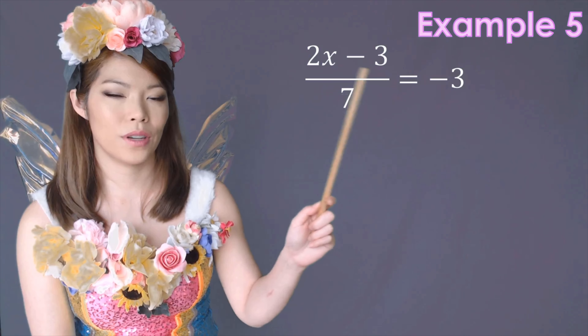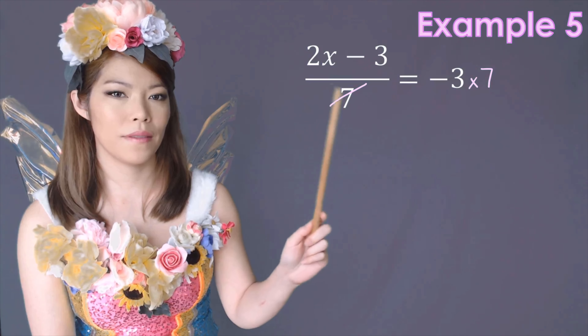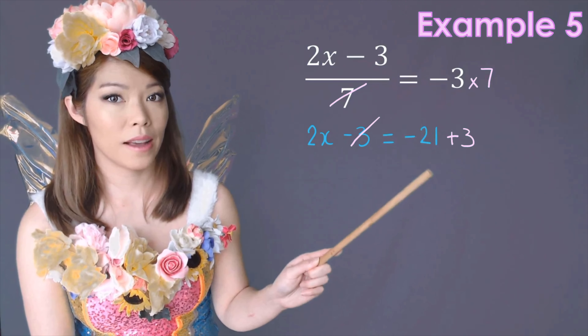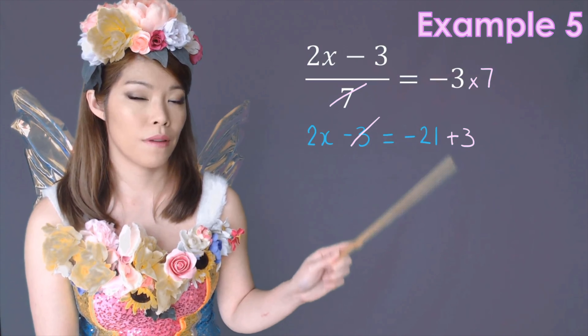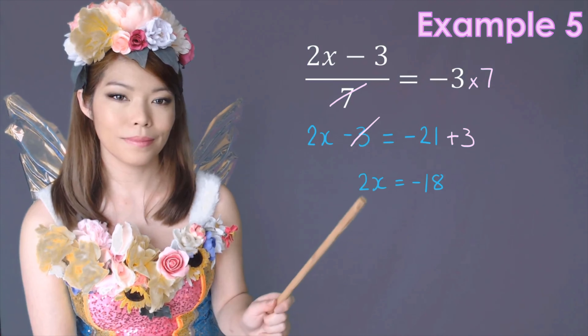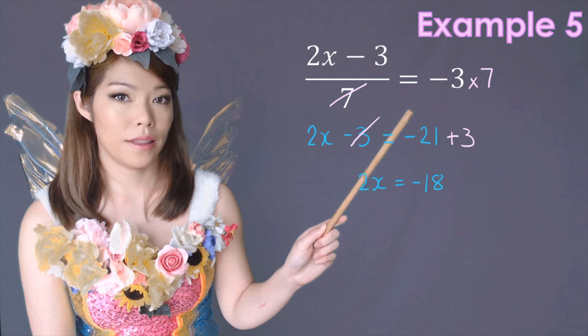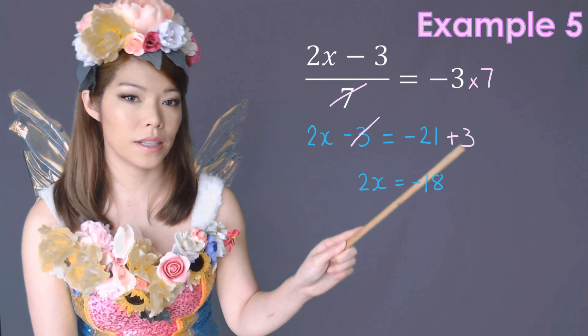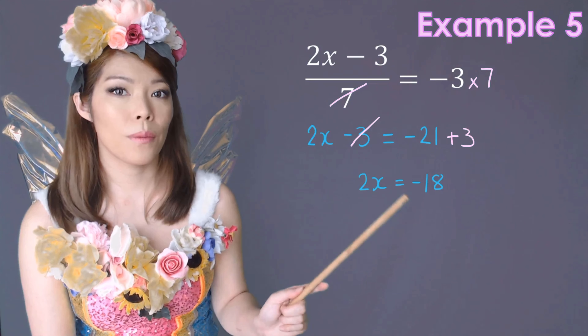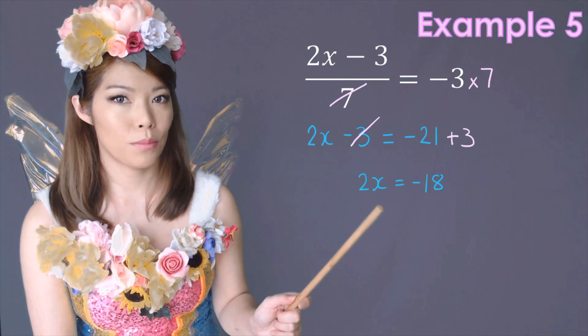For this example, we have to get rid of the 7 first, so we multiply both sides by 7. That disappears. Minus 3 times positive 7 — a negative and a positive becomes a negative — so the right-hand side becomes negative 21. Now we need to get rid of the 3. The inverse of minus 3 is plus 3. Minus 21 plus 3: think of it as money — if you owe someone $21 and you find $3, you still owe the difference, which is negative 18. Make sure you remember how to do directed numbers. If not, leave a comment and I'll send you some practice sheets.